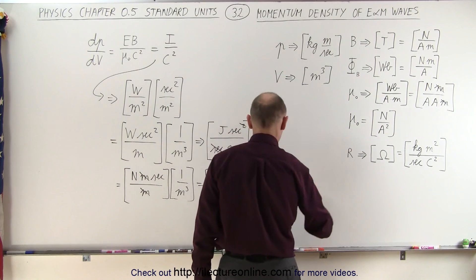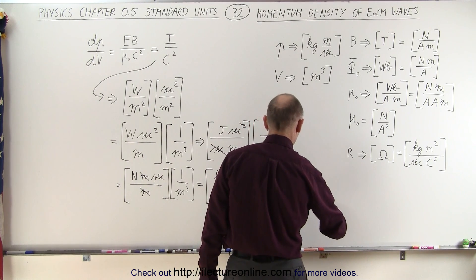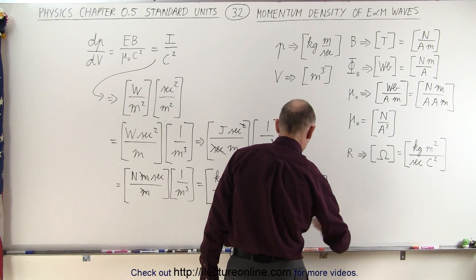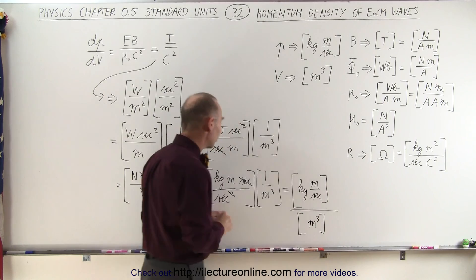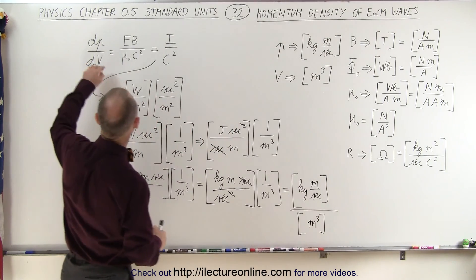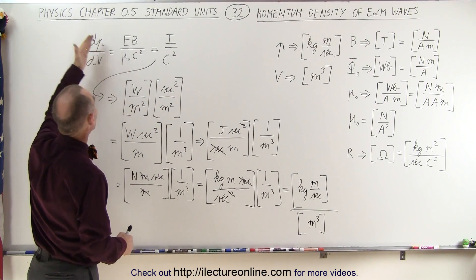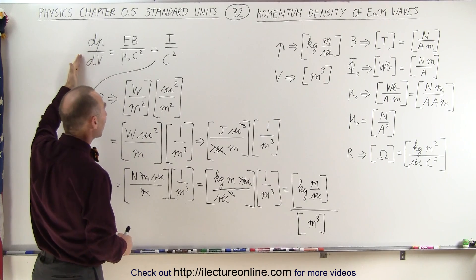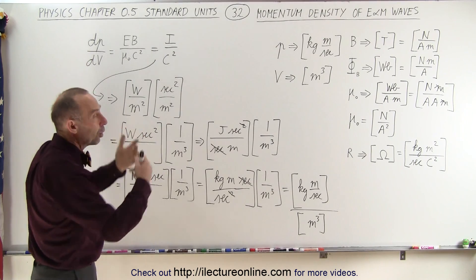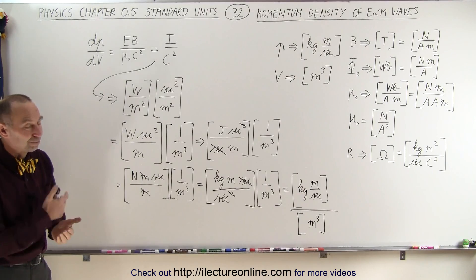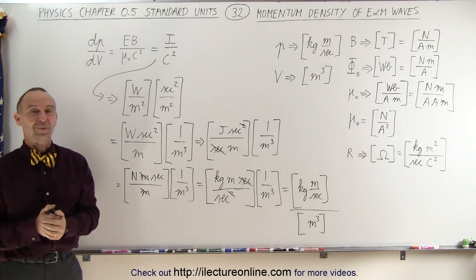We do indeed get kilograms times meters per second divided by meters cubed, which confirms that the original equation is indeed the equation for the momentum per unit volume — what we call the momentum density of electromagnetic radiation. And that's how it's done.